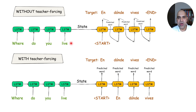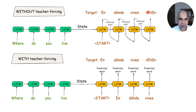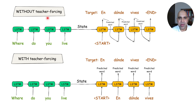During inference or testing, teacher forcing is not possible because the expected target is not available. The purpose of inference is to figure out what the translation is — if we already know the translation, there is no point of inference. So the inference situation uses predicted words as inputs for the next step, while the teacher forcing part is the training stage of the encoder-decoder. In teacher forcing, the target words become inputs for the next step; without teacher forcing during inference, the predicted word becomes the input for the next step.